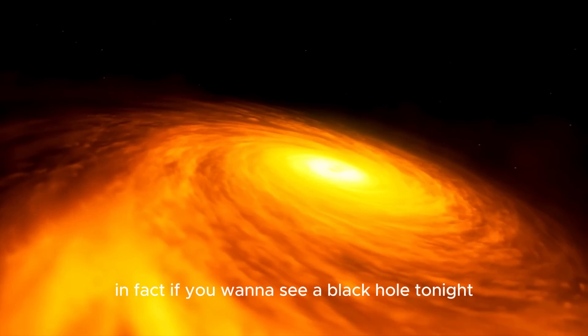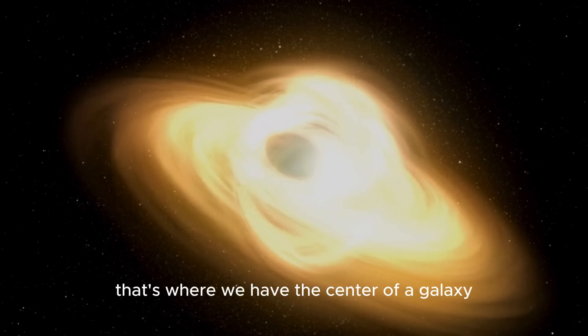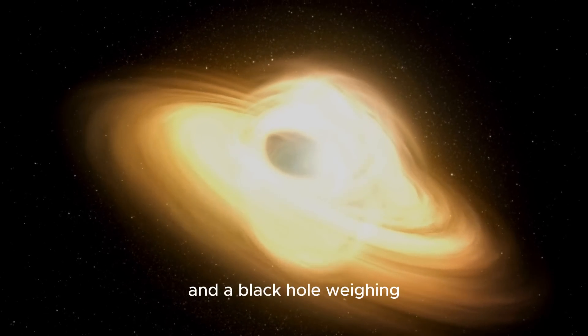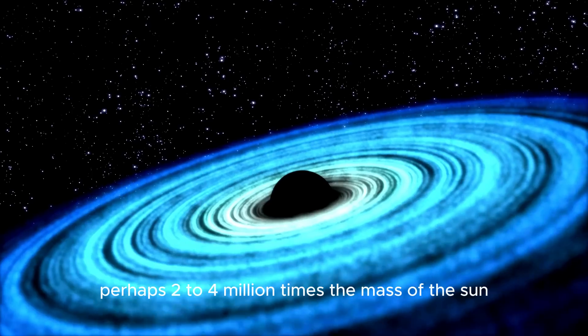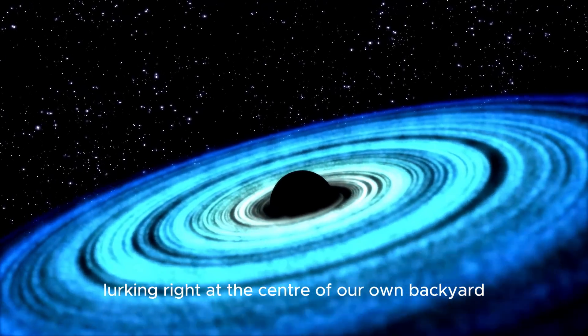In fact, if you want to see a black hole tonight, go outside and look in the direction of Sagittarius. That's where we have the center of a galaxy and a black hole weighing perhaps two to four million times the mass of the sun, lurking right at the center of our own backyard.